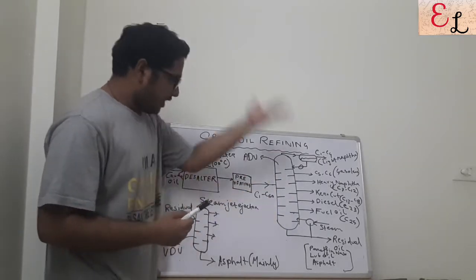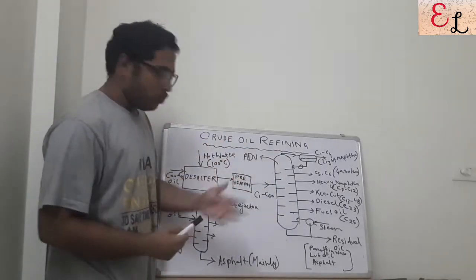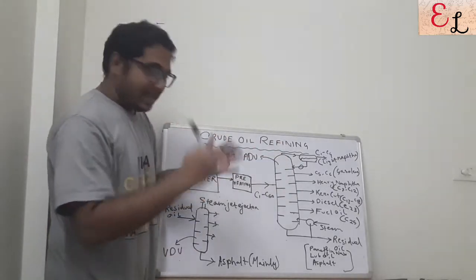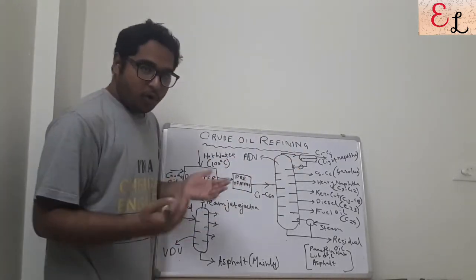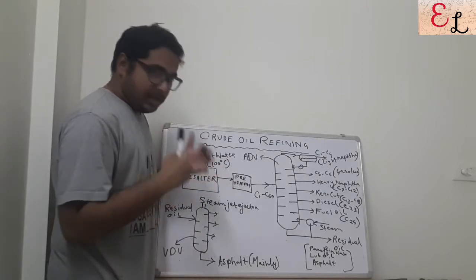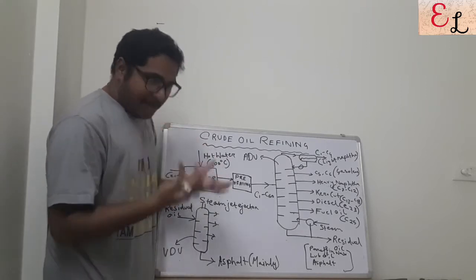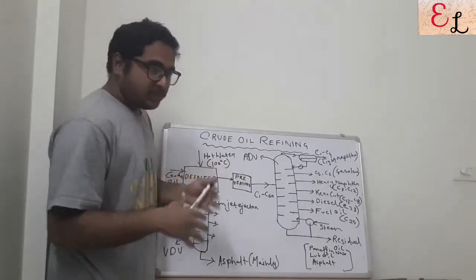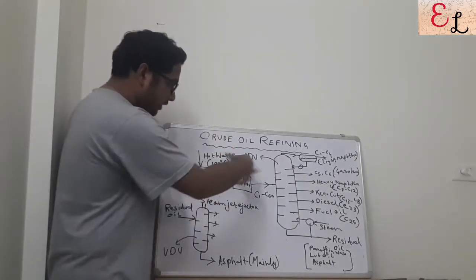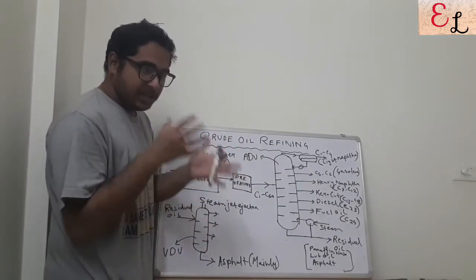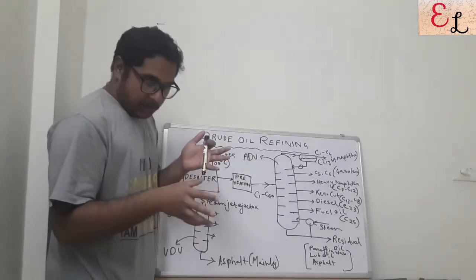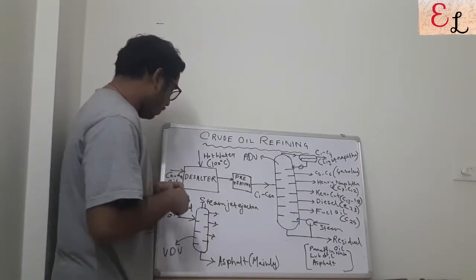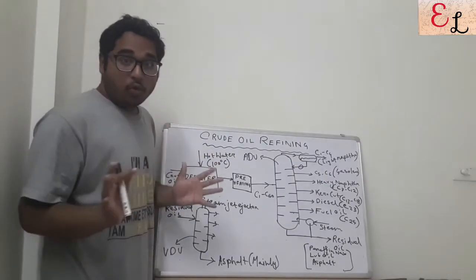We have to remove that salt because if we do not remove it and go to the distillation unit — where we do the distillation of the crude oil — it can form scaling over the trays or on the surface of the distillation column. Scaling is a very bad phenomenon because it prevents proper heat transfer or mass transfer between the gaseous and the liquid stream, which is unhealthy for the distillation process itself.